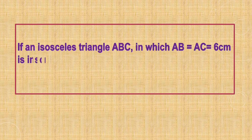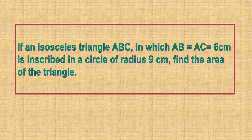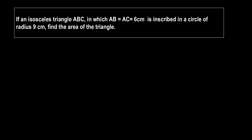If an isosceles triangle ABC in which AB equal to AC equal to 6 cm is inscribed in a circle of radius 9 cm, find the area of the triangle. So we have to find the area of the triangle which is inscribed in a circle of radius 9 cm, and that triangle is an isosceles triangle.